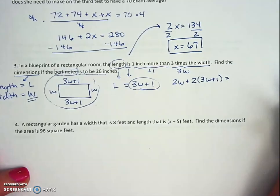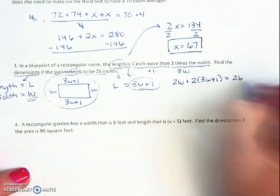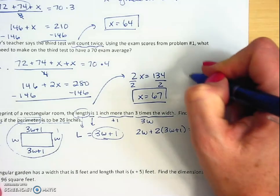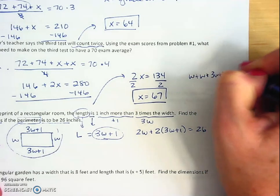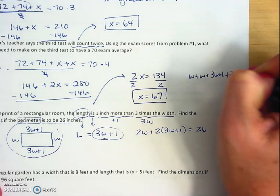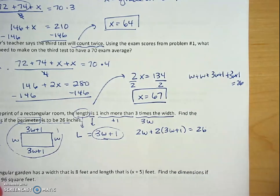If I was writing an equation for that, I could have, so I have two w's and two of the 3w plus 1's, so adding all of those up equals the perimeter of 26. You also could have done w plus w plus 3w plus 1 plus 3w plus 1 equals 26. That would have been good too.